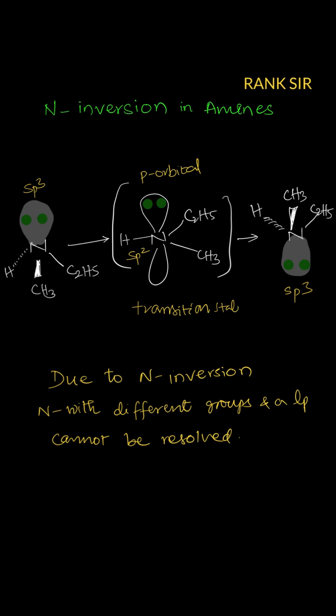Generally, transition state is unstable with the higher energy. Therefore, but in this one p orbital, this is a p orbital, lone pair present in the p orbital, somewhat fairly stable compared with the electron present in the sp3 hybrid orbital.